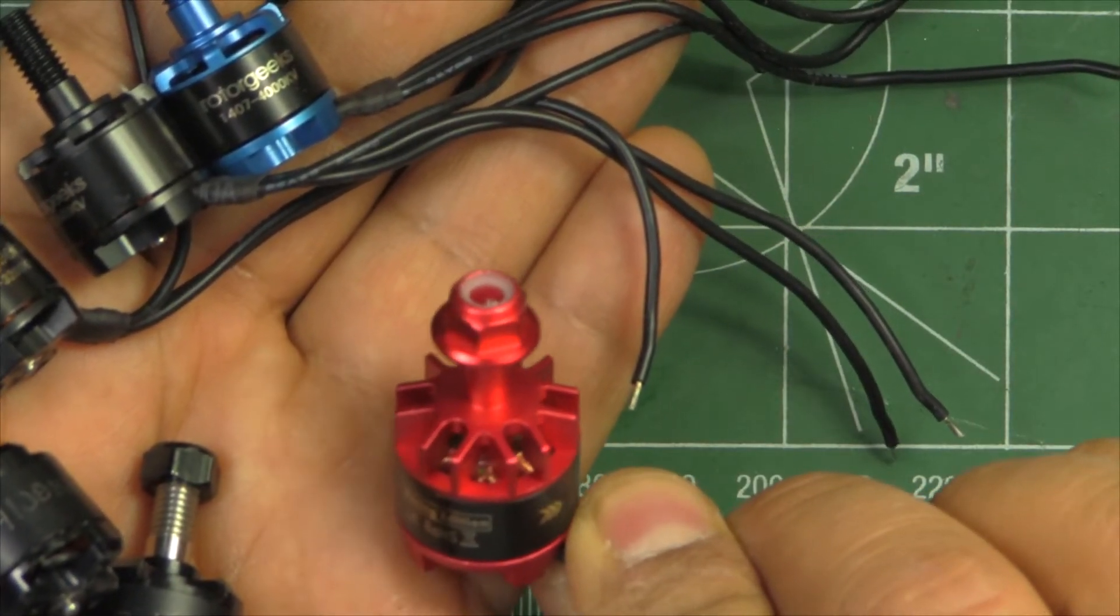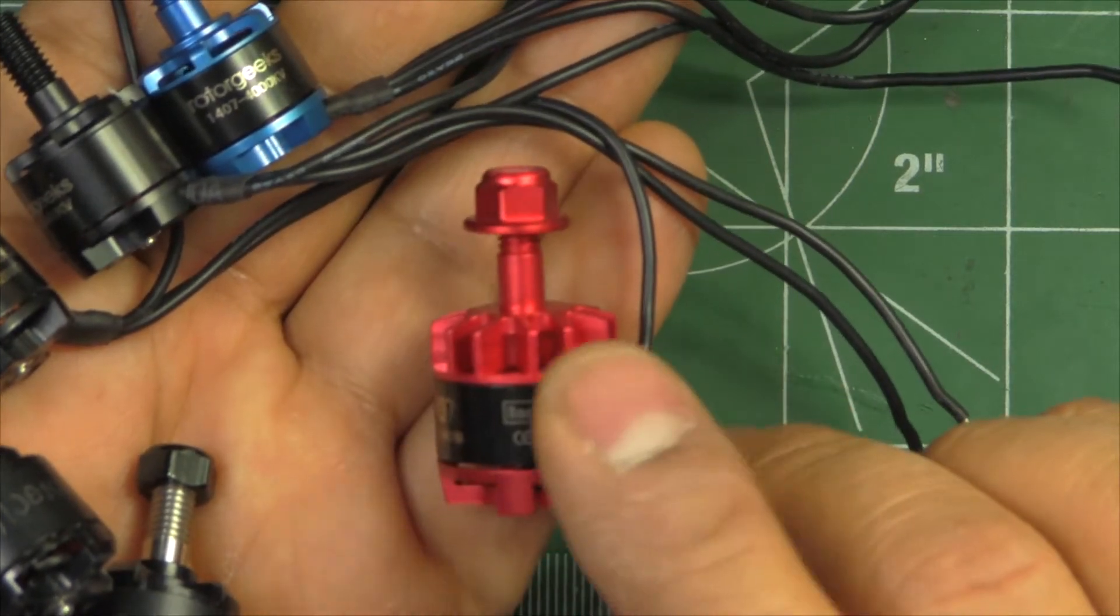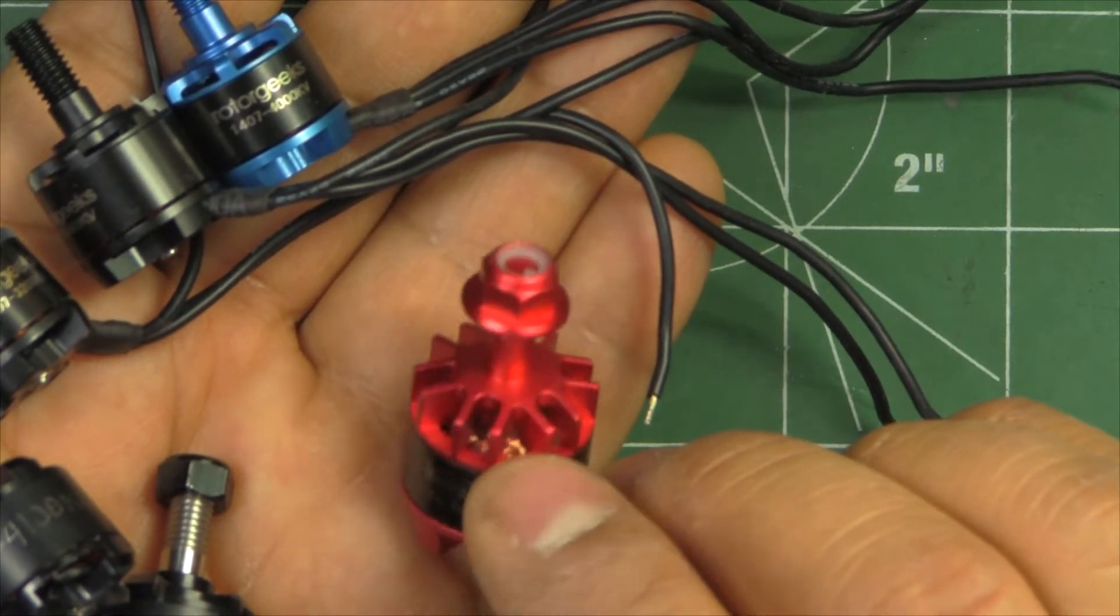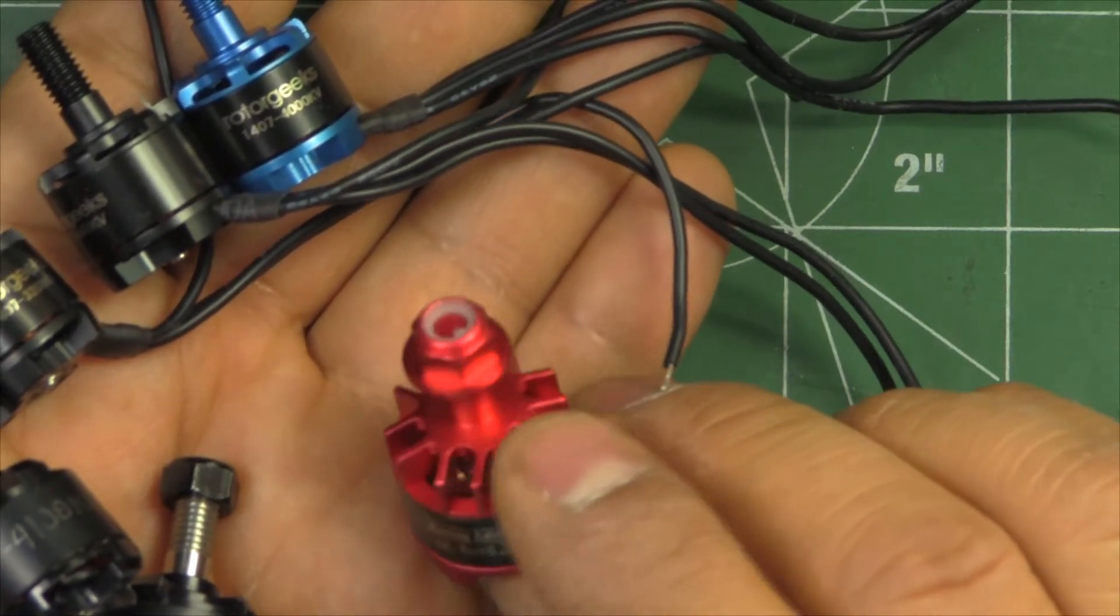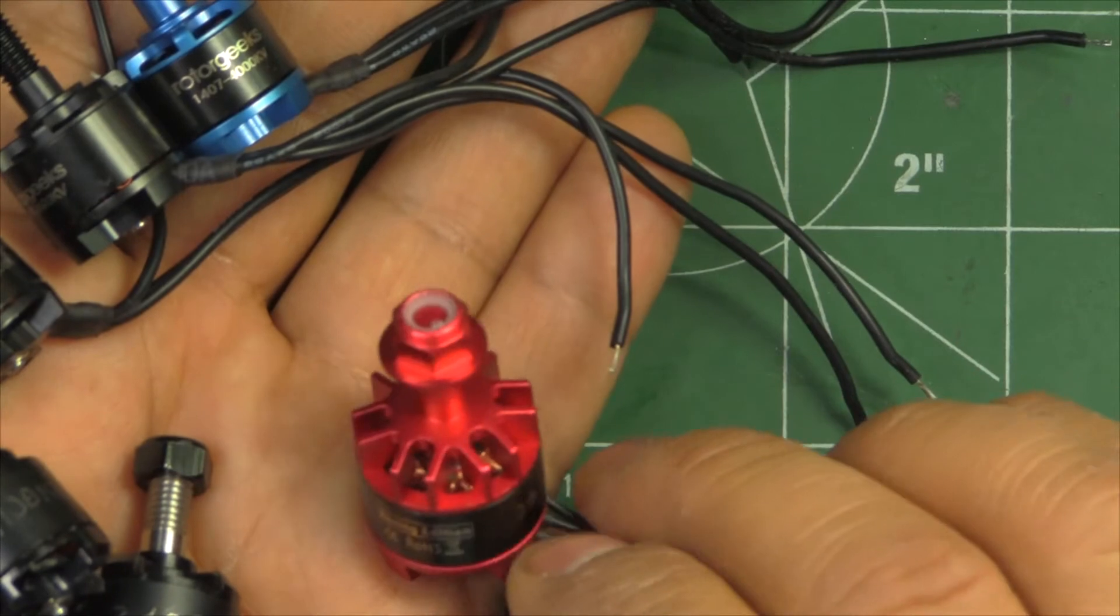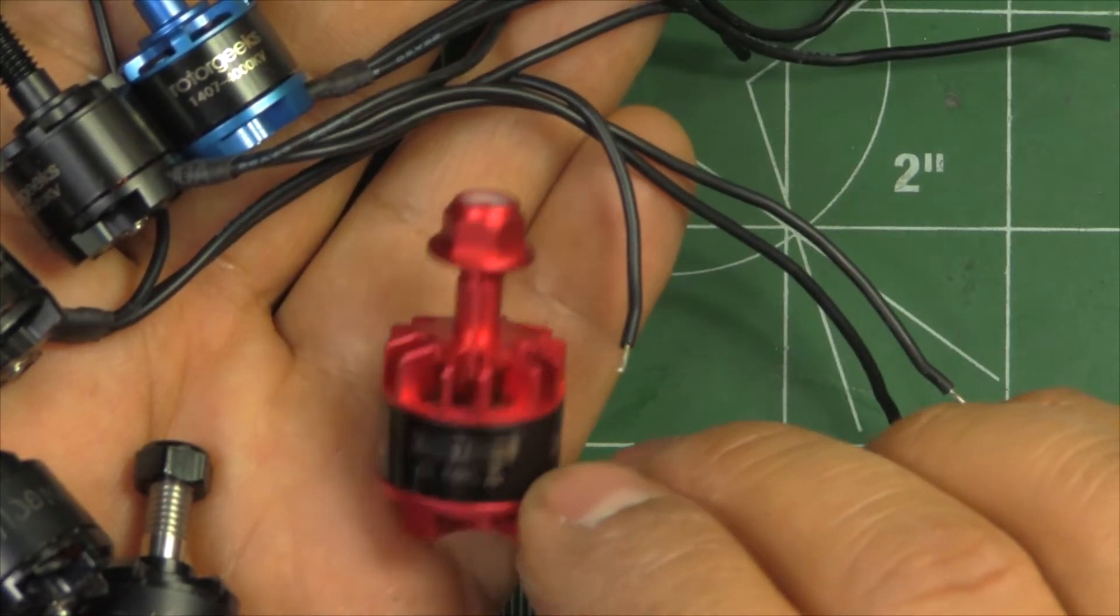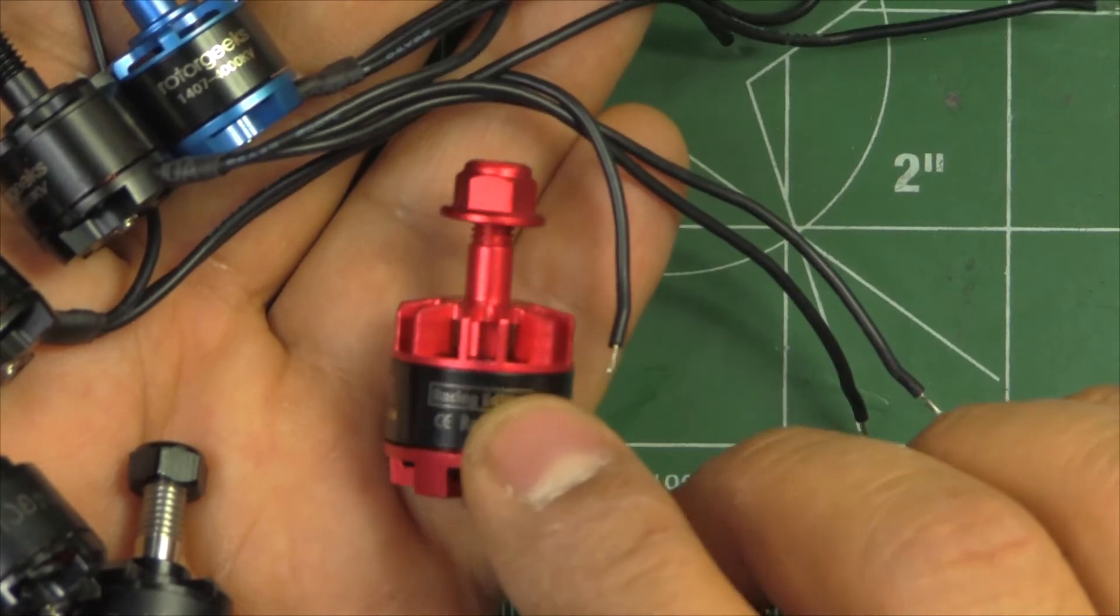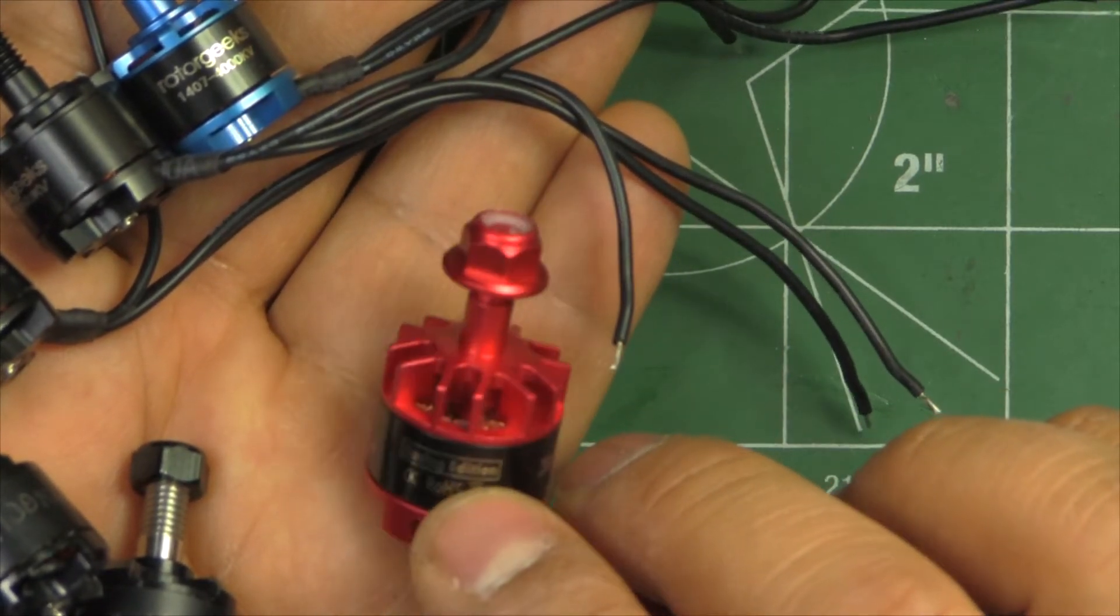Banggood because it infringed on Brother Hobby. So Brother Hobby objected to this motor. It looks too much like their 1407, so Banggood actually pulled it off the site and